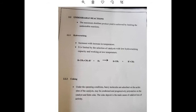Undesirable reactions: maximum distillate product is achieved by limiting these. Hydrocracking is not desirable—it decreases with increase in temperature and is limited by selecting catalyst with low hydrocracking capacity and working at low temperature. Coking is not desirable. Under operating conditions, heavy molecules absorbed on the acidic sites of the catalyst may condense and progressively polymerize, forming coke. This coke deposit is the main cause of catalyst activity loss.